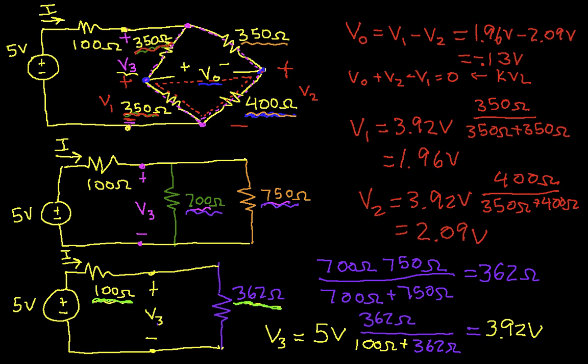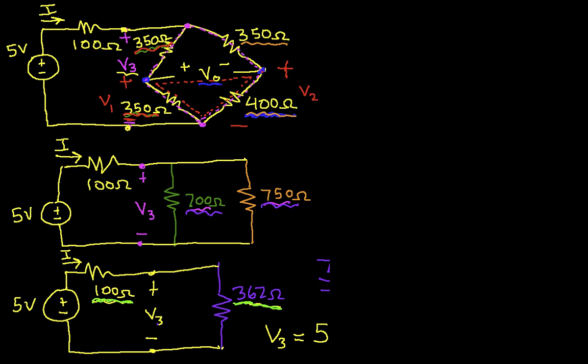So finding I is just a simple matter of dividing the voltage by the sum of the resistances. So I'll clean up some mess from the previous video to get some space to work. And basically then we can say that I will be this 5 volts divided by my 100 ohms plus my 362 ohms.